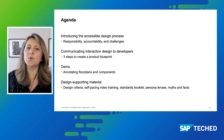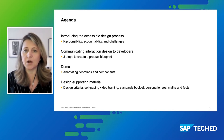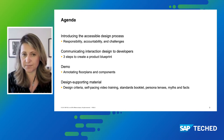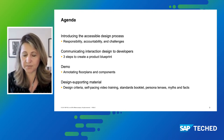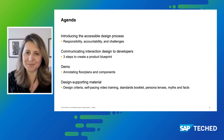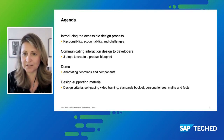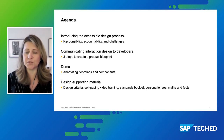Our agenda today will cover the design process that clarifies accountability and responsibilities of different roles, including design, and also describe some of the challenges faced by these roles. We will describe what it takes to communicate interaction design to developers based on a three simple step process and something that we call a blueprint — a product blueprint for accessibility. Following, we have a live demo showing how designers can annotate accessibility, and we finalize sharing some of the design supporting material, including trainings and guidelines.